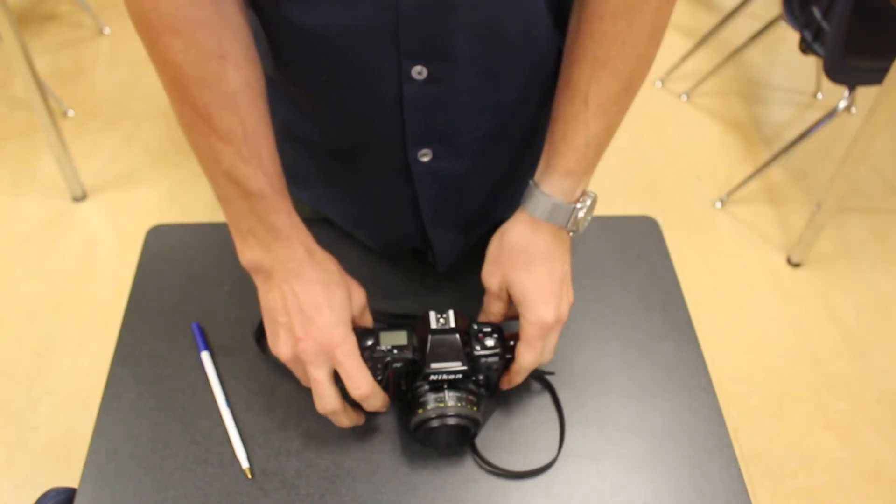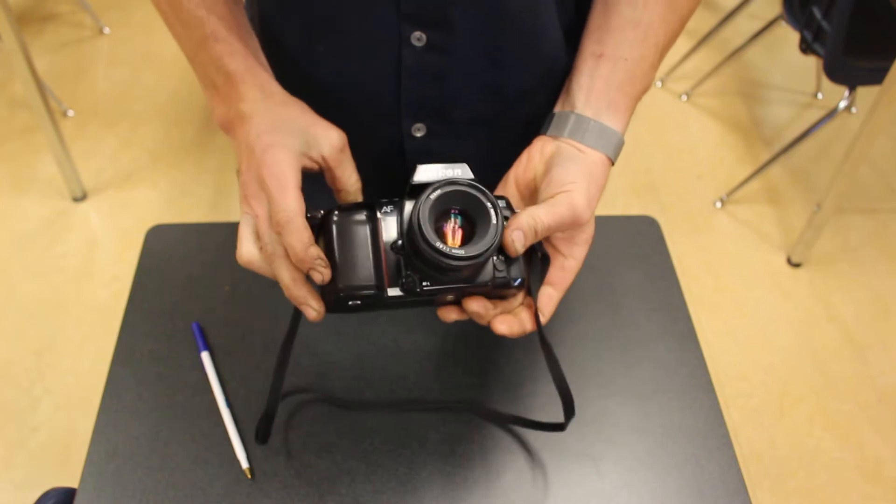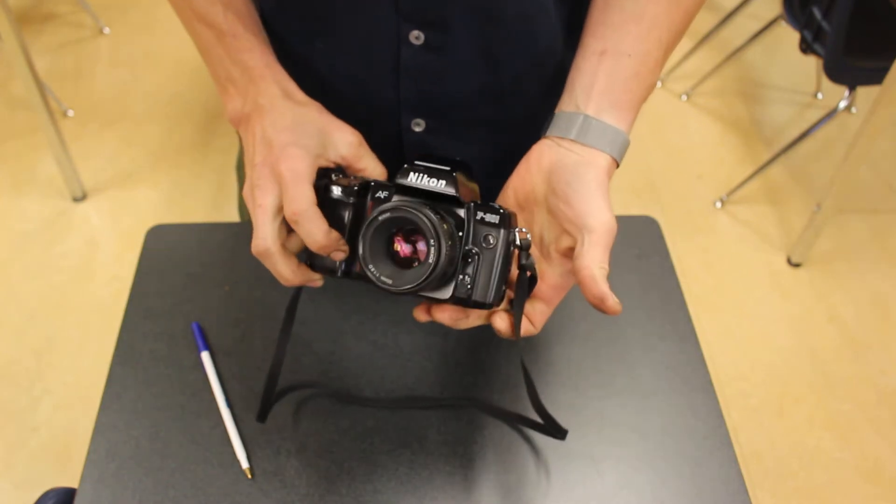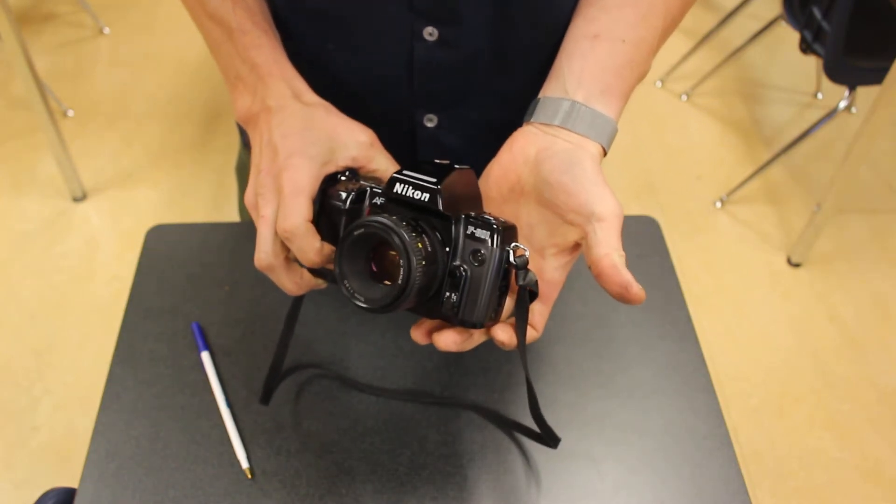Hi there. This is a lesson on how to load film into a Nikon SLR camera. This is an F801. Some different models will load slightly differently.